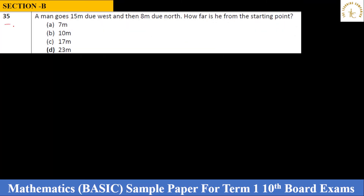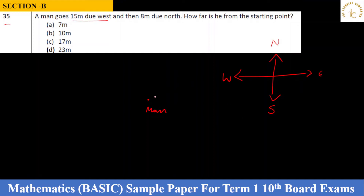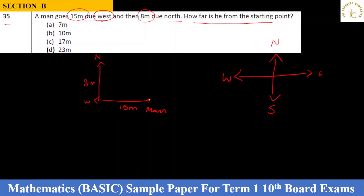Question 35: A man goes 15 metres due west, then 8 metres due north. How far is he from the starting point? First, know your directions — north is up, south is opposite, west is left, east is right. The man travels 15 m west, then 8 m north, forming a right-angle triangle. The starting point and ending point are connected by the hypotenuse.